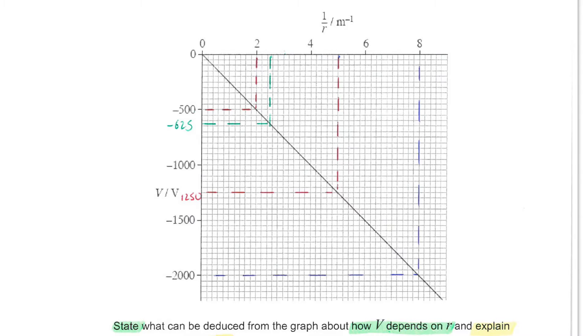You could look up on the datasheet and see the equation v equals 1 divided by 4 pi epsilon 0 multiplied by q divided by r. This graph is representing that equation.